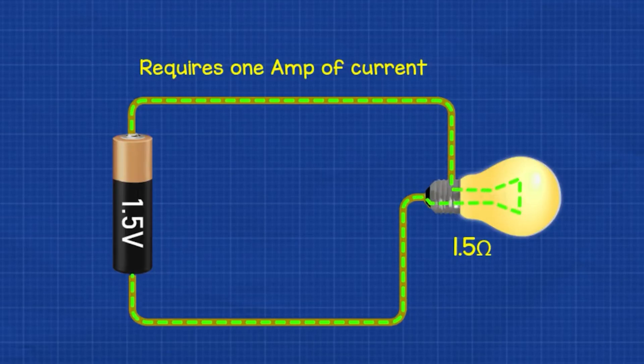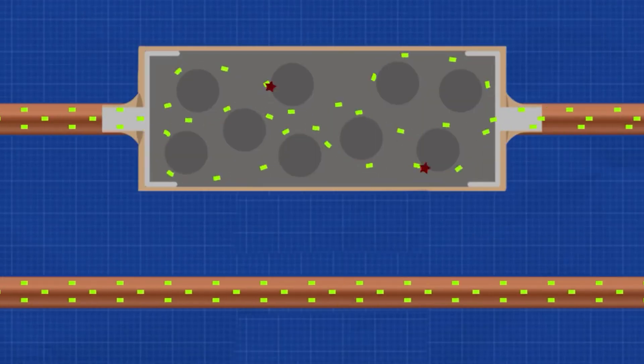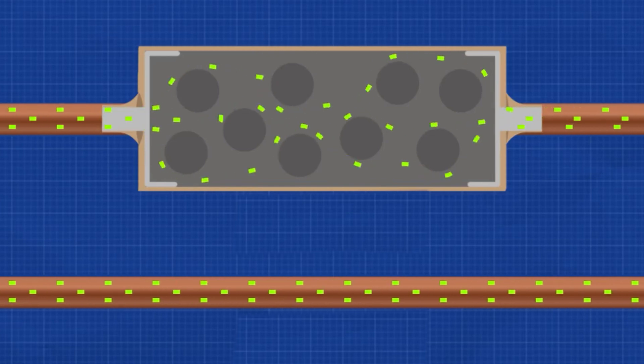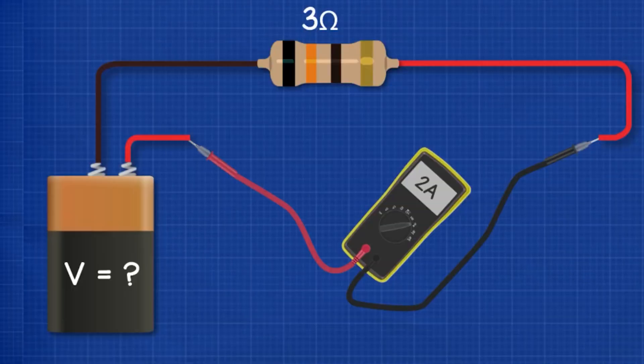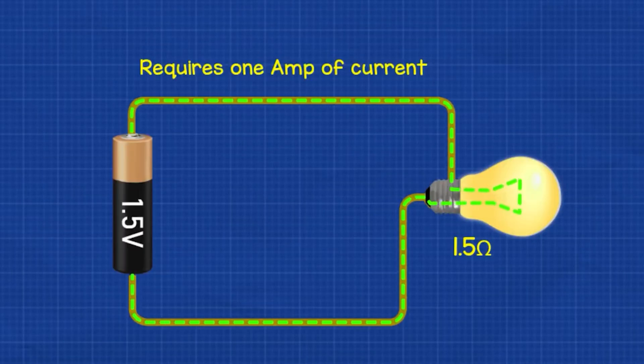A circuit is considered complete when it forms an unbroken loop, allowing electrons to flow from the voltage source through all the components and back to the source without interruption.